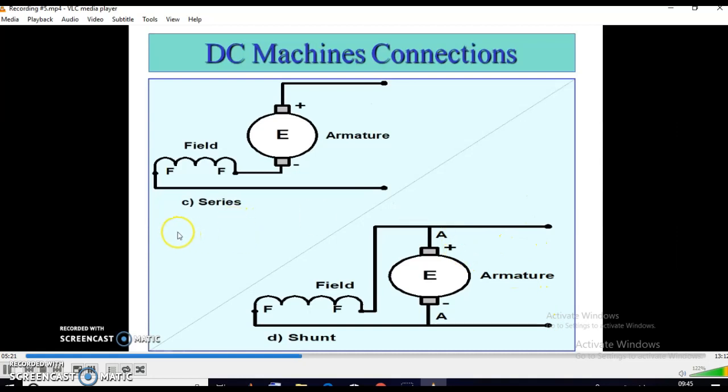Now, series excitation. Field winding consists of few turns of thick wire and is connected in series with the armature. Series field flux depends upon the armature current, because it is connected in series with the armature. So it is a current operated field.